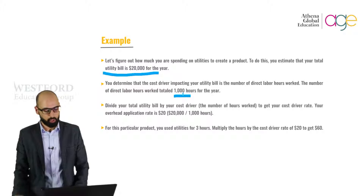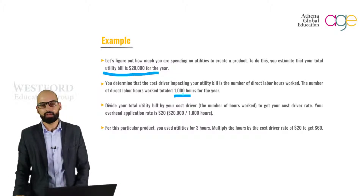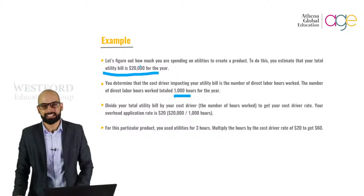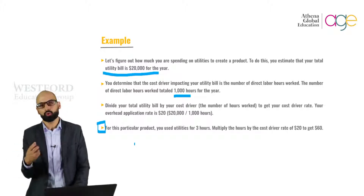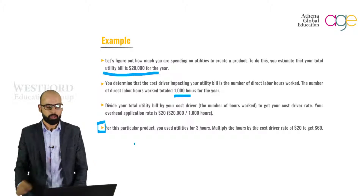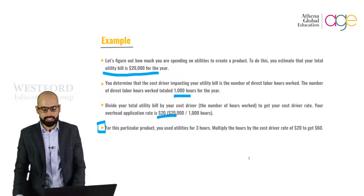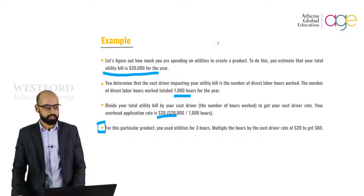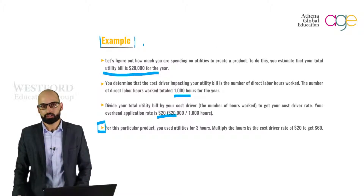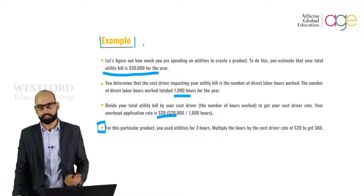For a specific product, say you use utilities for three hours. You multiply the hours by the cost driver rate of $20, giving a total utility cost of $60 per unit for that product. Similarly, for every other product you can get the costs in the same way. The logic is simple: you are tracing costs back to the activities that are causing them, as the cost drivers illustrate.